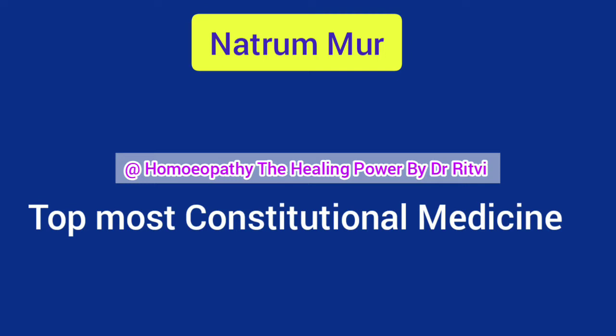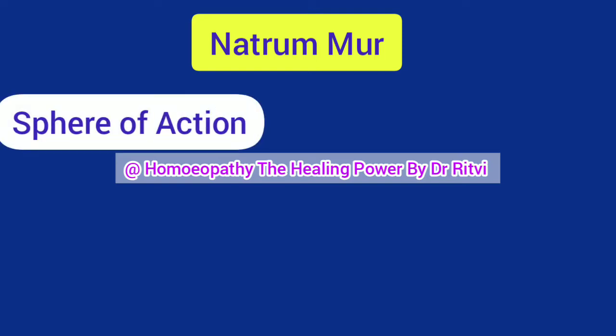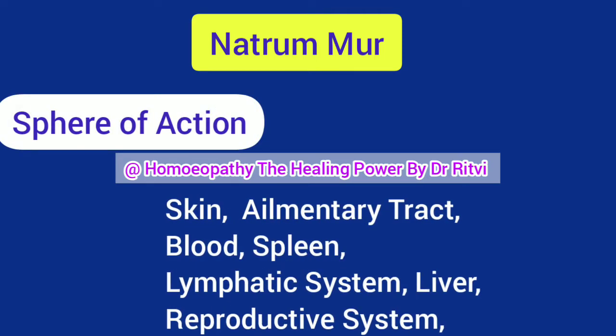Natrum Mur acts on almost each and every body part. But its main action is on skin, the alimentary tract, blood, the lymphatic system, liver, spleen, and genital organs.